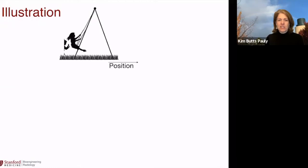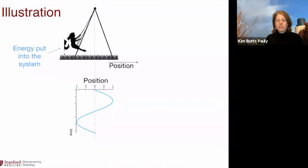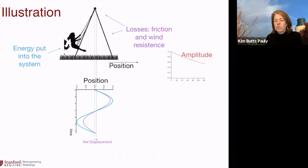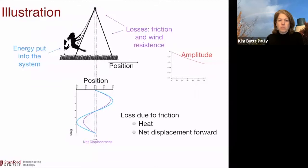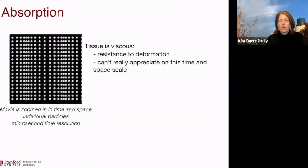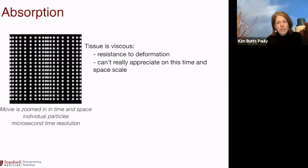Let's talk about absorption. I like to bring in the illustration of the child on the swing, because we put energy into the system by pushing the child, and the child oscillates around some equilibrium position. In the absence of any losses, that's fine, but there are going to be losses. Because of those losses, there's going to be an amplitude decrease, and they're going to oscillate at a position forward of the equilibrium — a net displacement forward. Losses like friction and wind resistance give rise to temperature, and there's a net displacement forward.